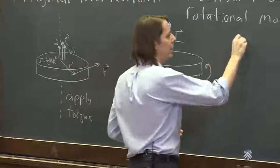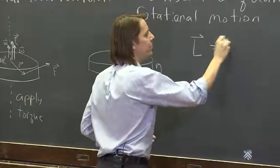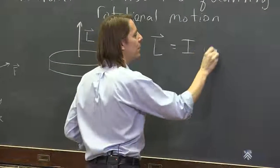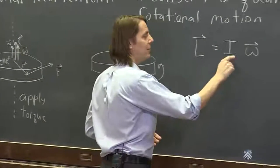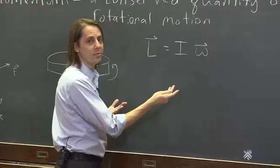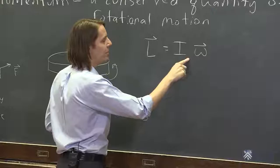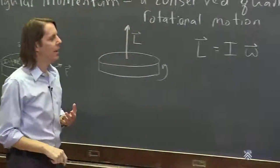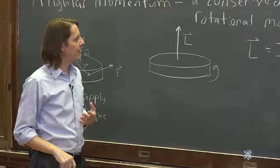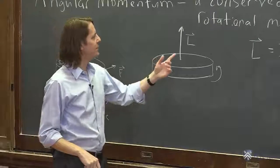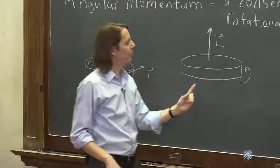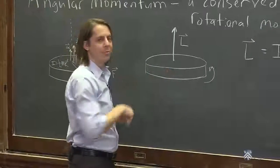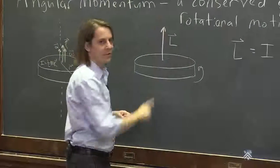L is simply the moment of inertia times omega. Just like translational momentum is P equals mass times velocity, this is the rotational version—moment of inertia times angular velocity. You can see that just like all these, it's in the same direction. The angular momentum vector points up perpendicular to the plane of rotation and along the axis of rotation.